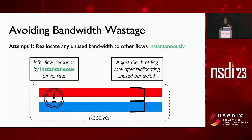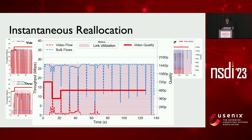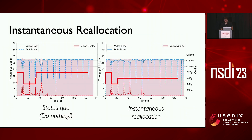This would be work-conserving, quite like weighted fair queuing at the ISP — meaning we would not waste any bandwidth. So let's see if it really helps. And it doesn't help at all. In fact, this result is quite similar to the experiment where we did nothing and allowed bulk flows to steal all bandwidth from the video flow.